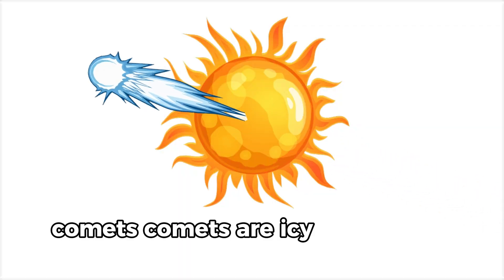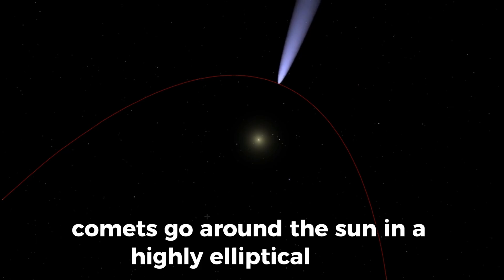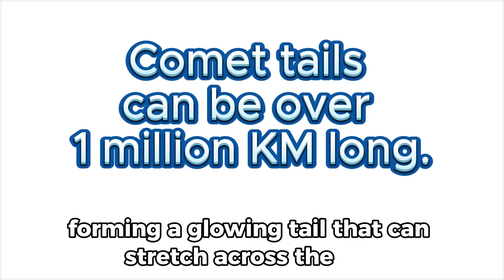Comets are icy bodies that orbit the Sun. Comets go around the Sun in a highly elliptical orbit. When they get close to the Sun, their ice turns into gas, forming a glowing tail that can stretch across the sky.